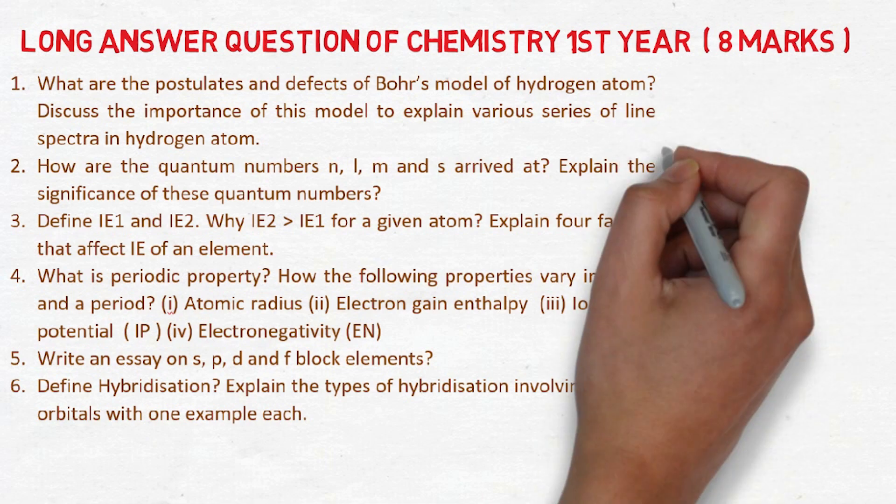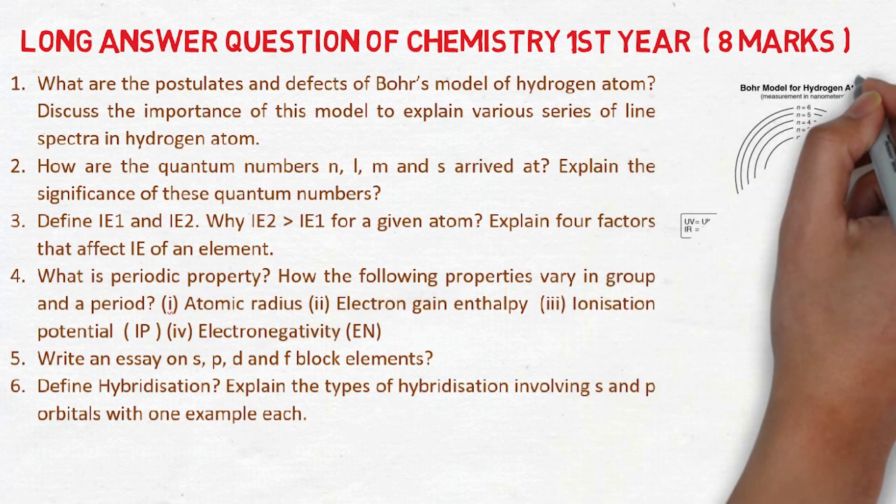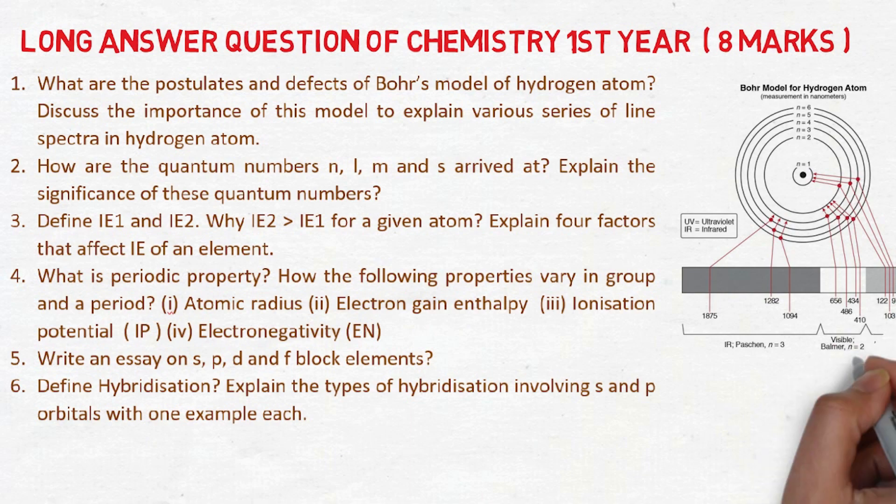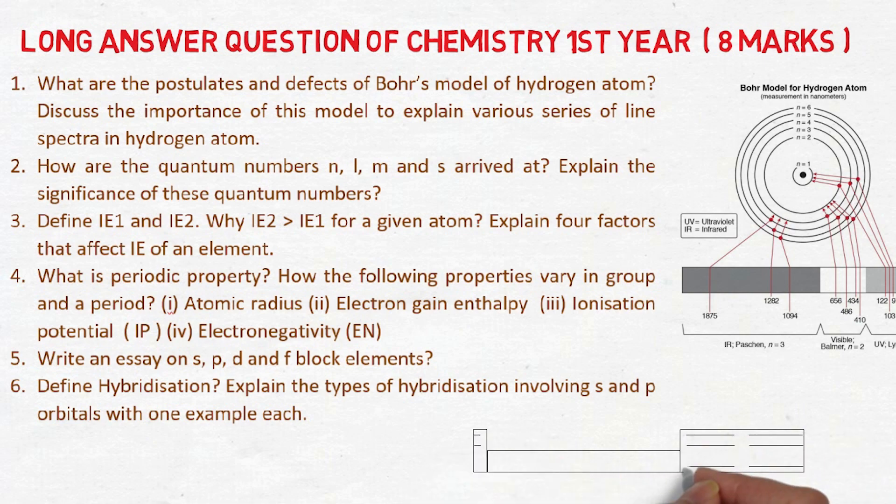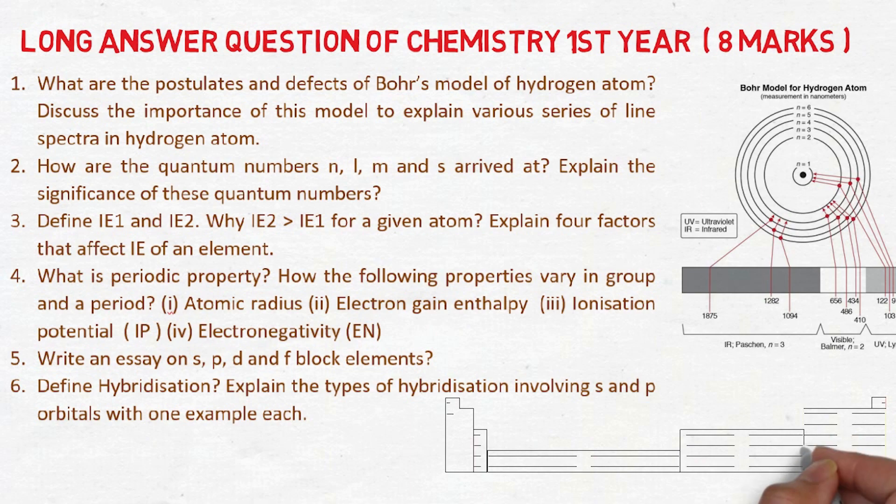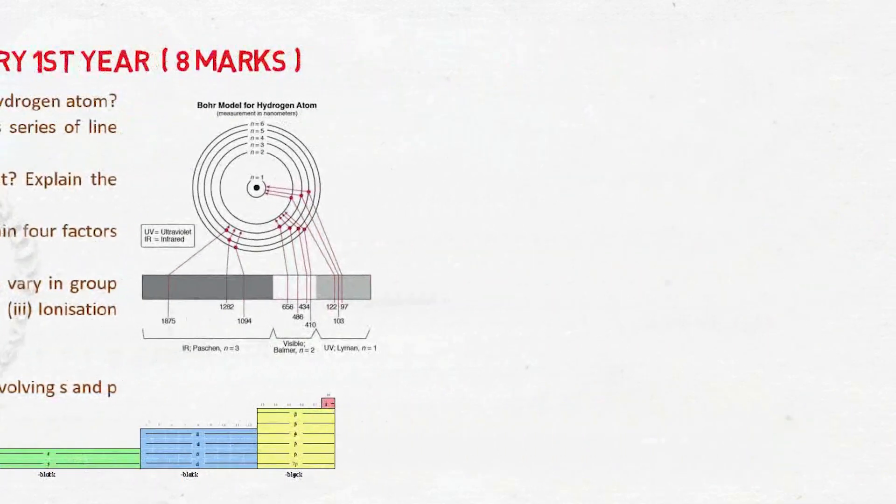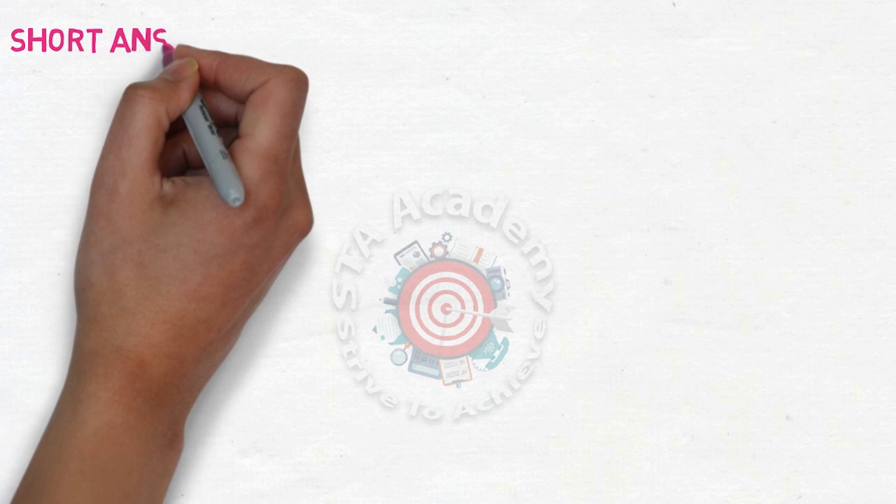Fourth is what is periodic property and how the following properties vary in group and period. Fifth is write an essay on s, p, d, f block elements. Sixth and the last LAQ is hybridization, very important questions. These six questions will definitely give you 16 marks in your IP exam. Practice each and every question to get maximum marks in your exam. Let us see the next SAQ questions.